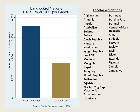Looking at the landlocked countries, there are actually a few in Europe — Austria, Czech Republic, Hungary, Switzerland. But these countries are actually quite close to the coast and close to other rich countries. If you take those countries out, the difference becomes even more stark. Among the landlocked nations, the richest outside of Europe is actually Botswana, which has diamonds. What you also notice is that all of the poorest landlocked countries are in Africa. In fact, Africa has more landlocked countries than any other continent.